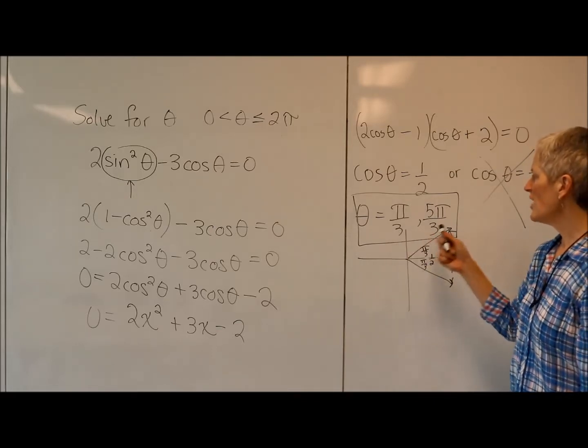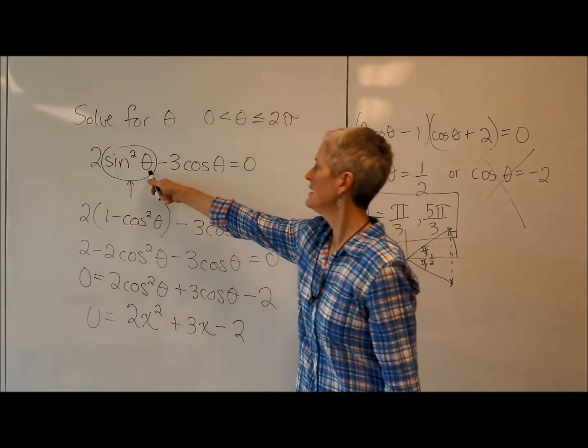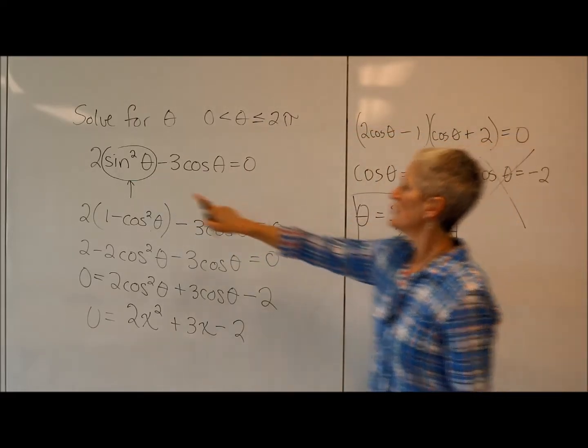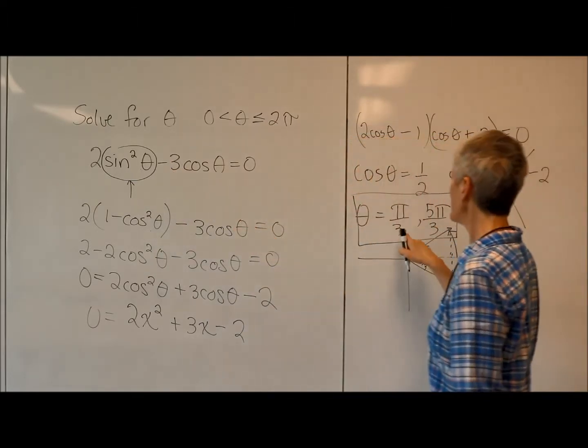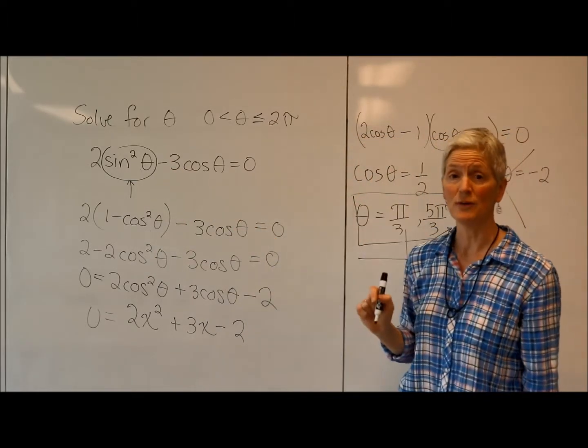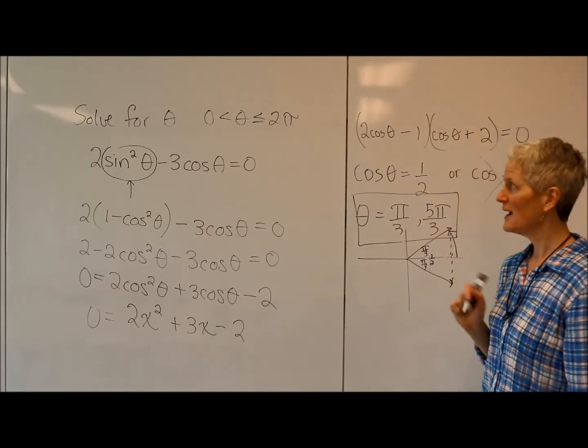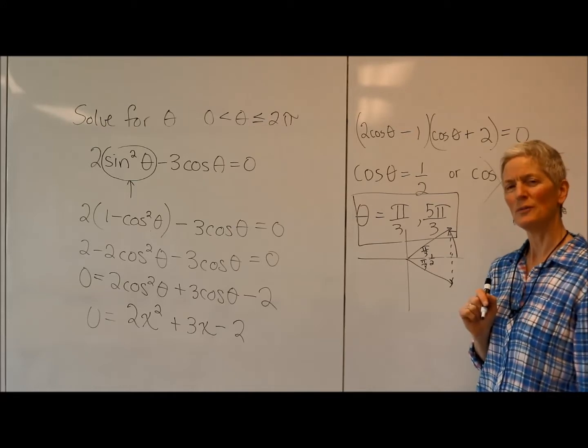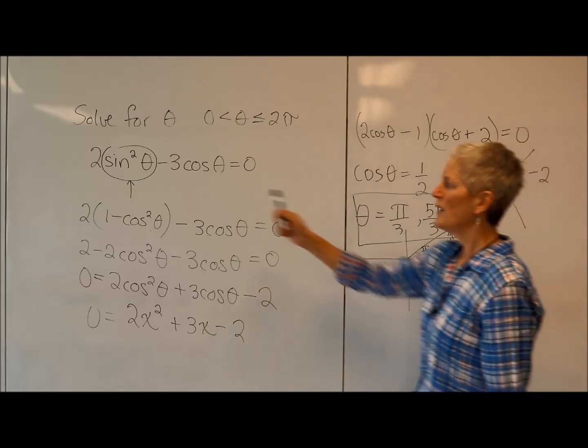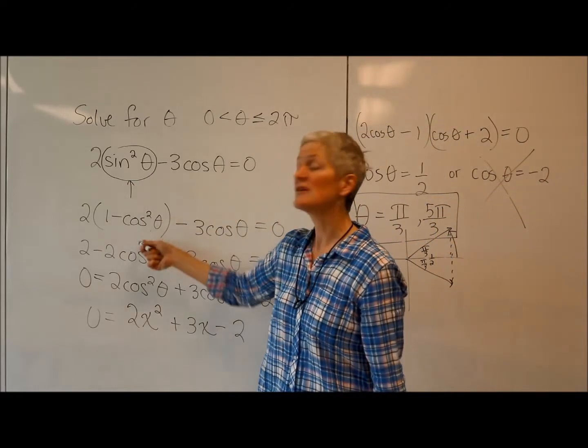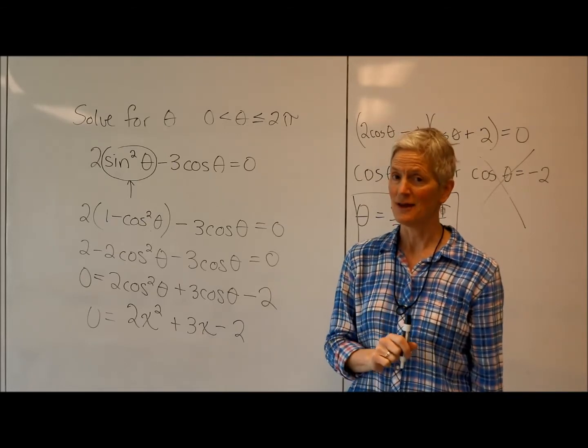OK? And of course, you can check these very easily by substituting those back in to the original. So 2 times the sine of π over 3, quantity squared, minus 3 times the cosine of π over 3 will get you a 0. So too will 5π over 3. All right. That wasn't horrible, right? It's really just solving a trig equation with that initial substitution using our knowledge of identities. All right. I hope that helped.